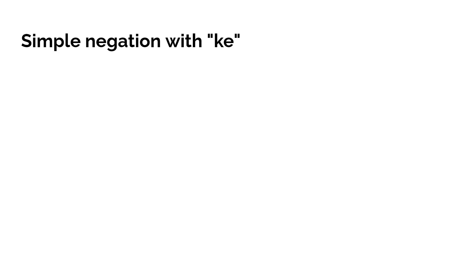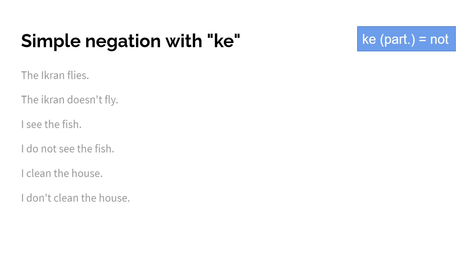Simple negation actually is very easy. We use the small particle 'ke' for that, which can be translated as 'not' in English. Let's look at some simple sentences in English: 'The ikran flies' and then 'the ikran doesn't fly.' That's the negated sentence. 'I see the fish,' 'I do not see the fish.' 'I clean the house,' 'I don't clean the house.'